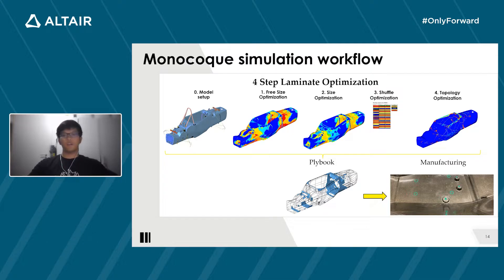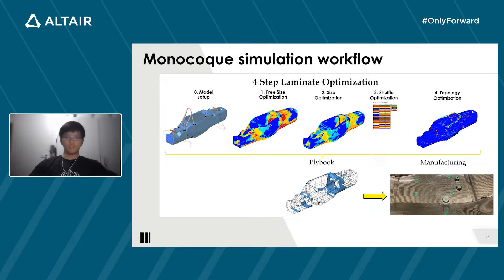Here is the workflow of the monocoque simulation. The monocoque is optimized in four steps. First, the model is set up in HyperWorks, modeling all the interfaces of components with the monocoque, inputting material properties, connecting components, and creating the element mesh. Once the model is set up, the first free-size optimization is done — optimizing where material is needed. Then the size optimization takes manufacturability into consideration. Shuffle optimization smooths the layers of laminate to achieve the best order. Finally, topology optimization. After the optimization steps, the laminate is defined and ready for manufacturing, minimizing weight while achieving reasonable stiffness and ensuring structural safety.